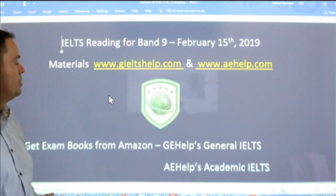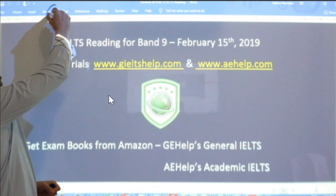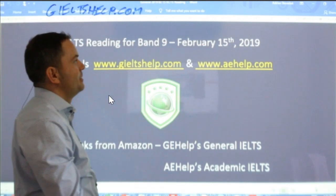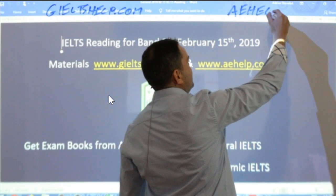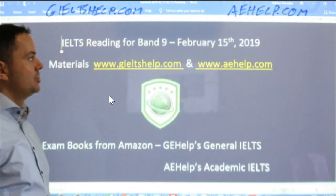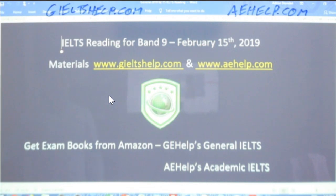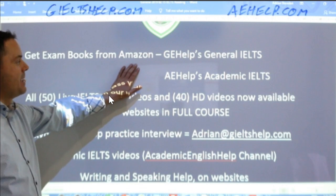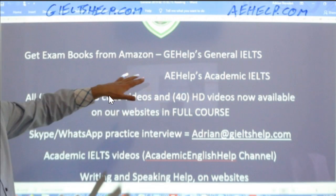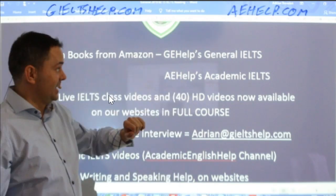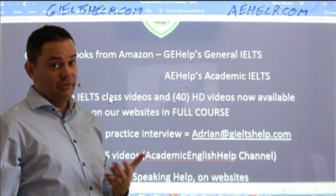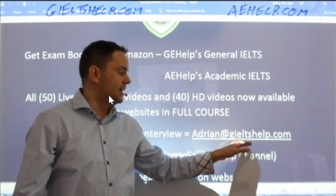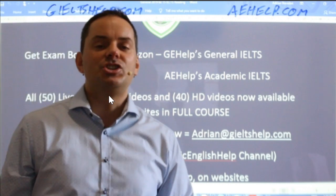Our materials are coming from our website, so check us out at giltshelp.com for general IELTS. And if you are studying for academic IELTS, visit us at aehelp.com. You can also check out our academic IELTS YouTube channel, which is called Academic English Help. We do live sessions there also. You can get our books from Amazon — our six original practice exams for the IELTS. Look for GE Help's General IELTS and AE Help's Academic IELTS on Amazon. If you have questions about the IELTS or about our products, feel free to send me an email: adrian at giltshelp.com.